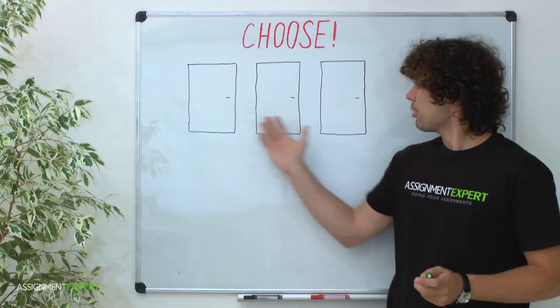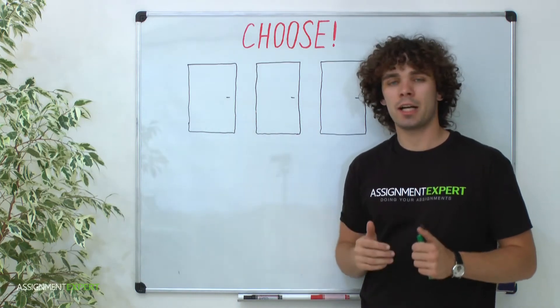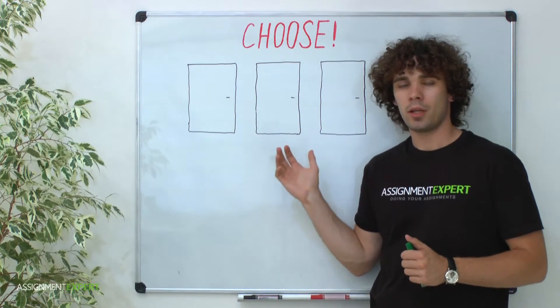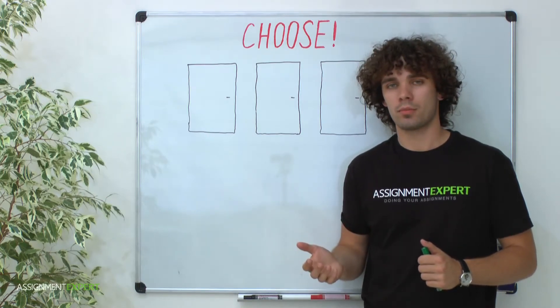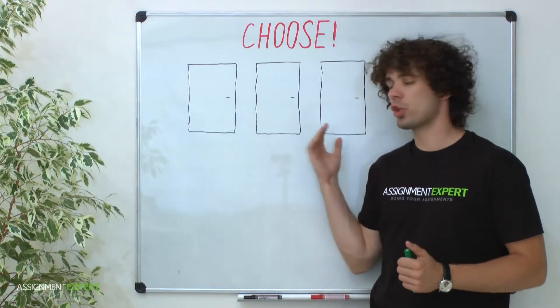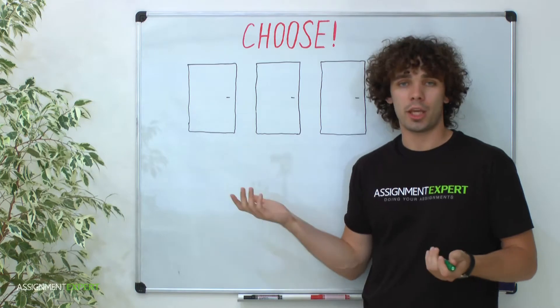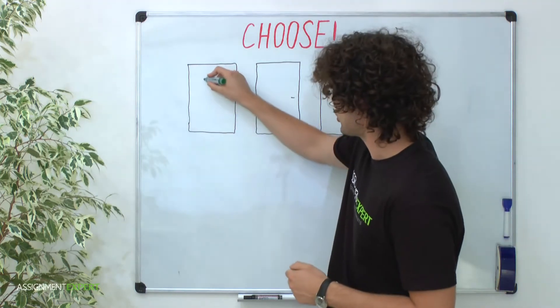So, here we have three doors, and a much-desired car is behind one of them. Behind two other doors there are goats. Now it's time to choose which door you'll go. Okay, I'll imagine you'd pick the first door.